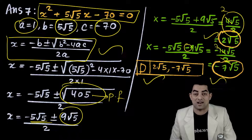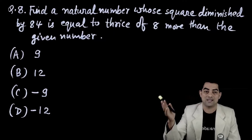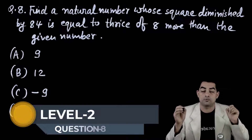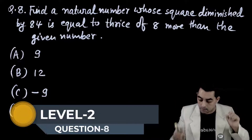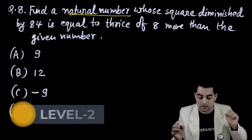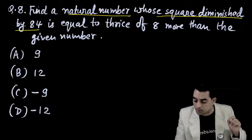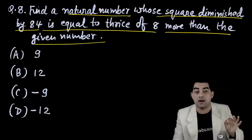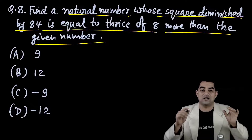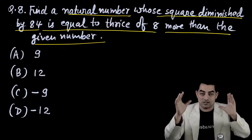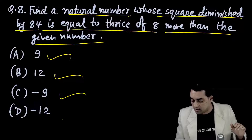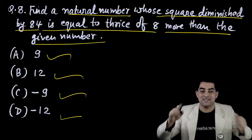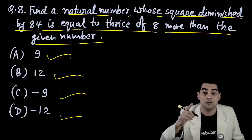Question number 8 is a word problem: find a natural number whose square diminished by 84 is equal to thrice of 8 more than the given number. Options: 9, 12, -9, -12. Pause the video and attempt the answer.